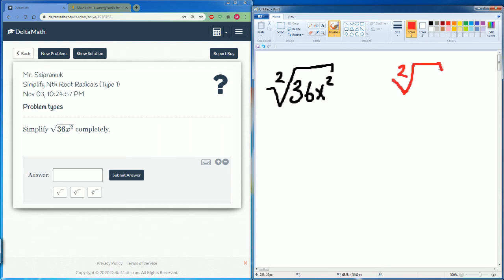So the square root is just to the 1/2 power. So we take 36 to the 1/2, and we have x squared, and that's going to be divided by 2. Right, 36 to the 1/2 is just 6.